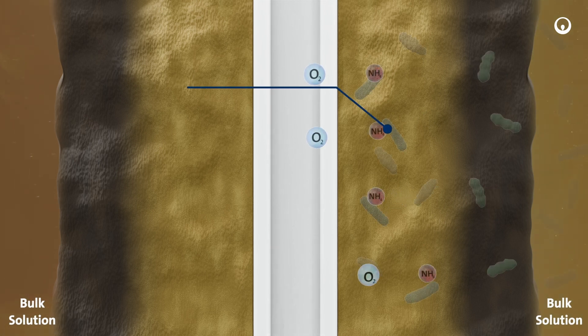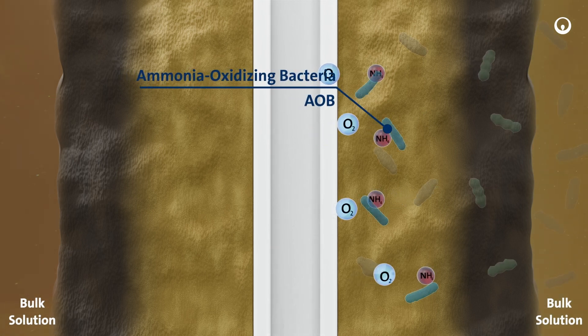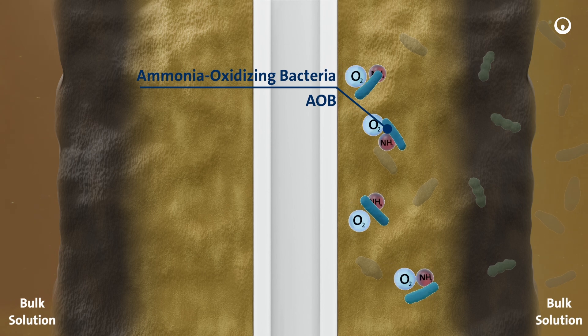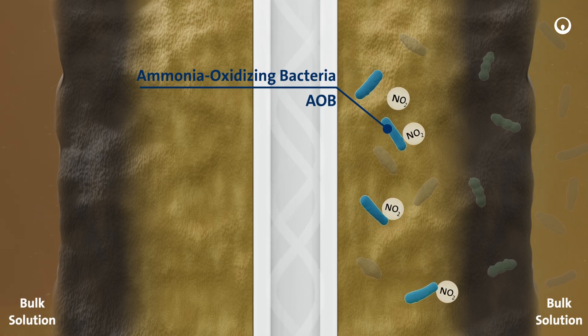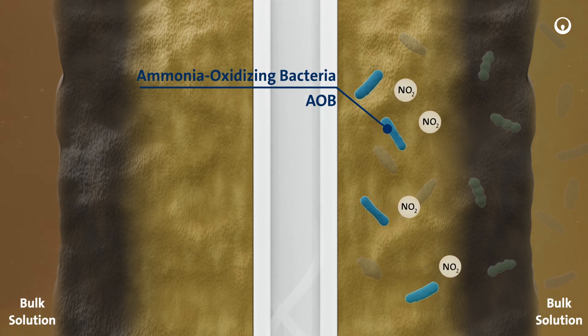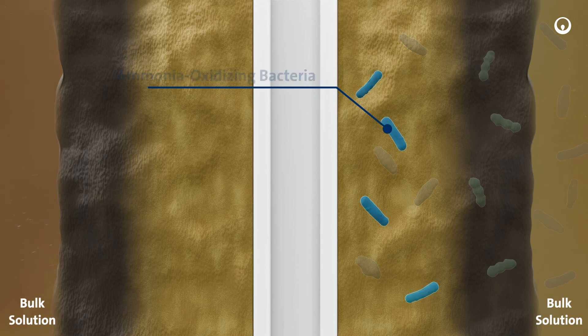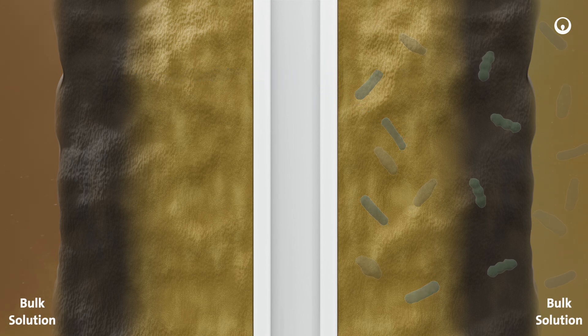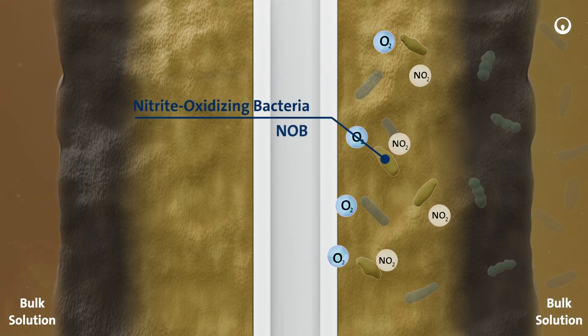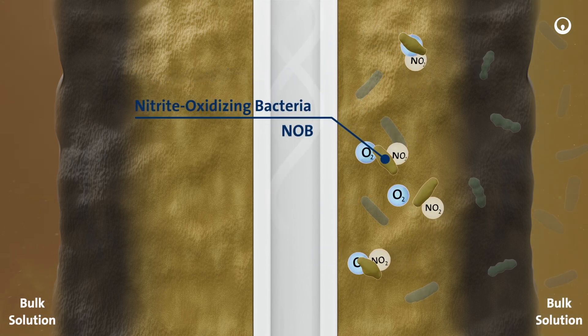The nitrification process uses ammonia oxidizing bacteria to convert ammonia into nitrite. Nitrite oxidizing bacteria then convert the nitrite into nitrate.